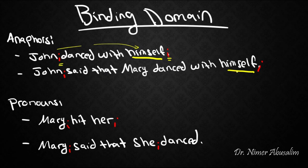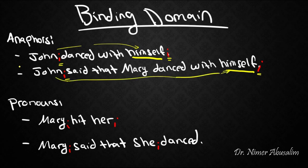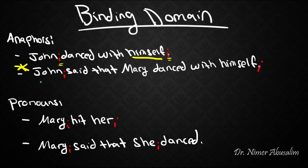Now, 'John said that Mary danced with himself.' Principle A states that 'himself' as an anaphor should be bound. It is bound here because it is coindexed and John c-commands himself — but we still find that this sentence is ungrammatical. Let's try to find out why.